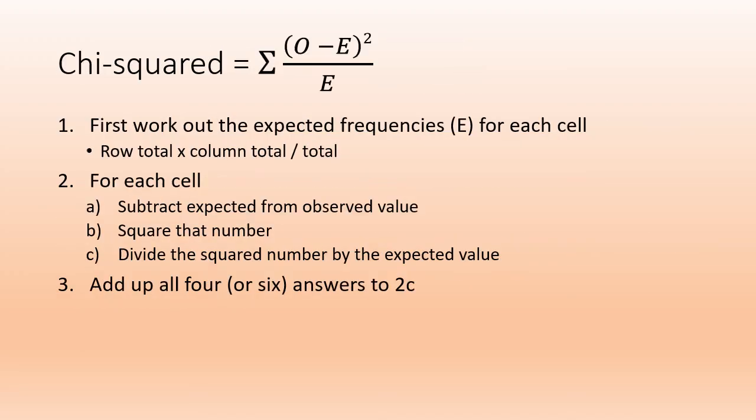Last but not least, the chi-squared equation. First of all, you've got to work out the expected frequencies for each cell—that might be four cells, that might be six cells. We do that: row total times column total divided by total total. Then for each cell, work out the difference between the expected and the observed, square it, divide that number by the original expected that you worked out in part one. When you're done, add up all of those numbers, and that gives you your final value of chi-squared.